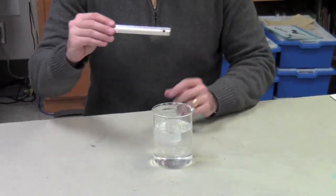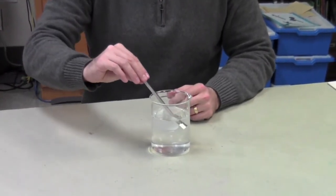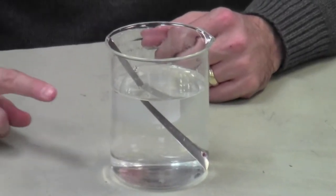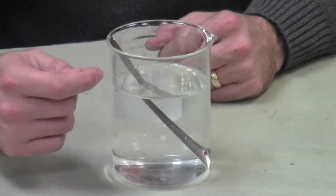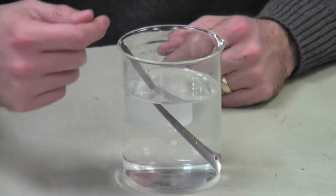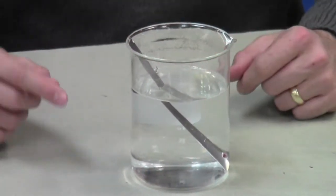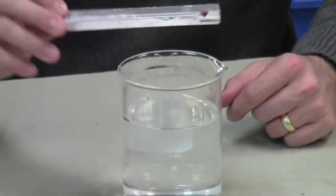When I place it in the water, watch what happens. As you can see, it appears that the thermometer is bent or almost separated, broken in half. When in reality, when I take it out, it's not.